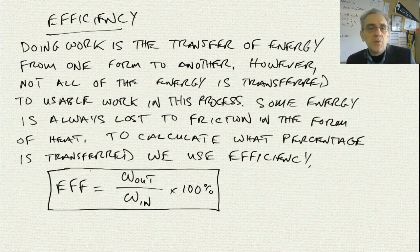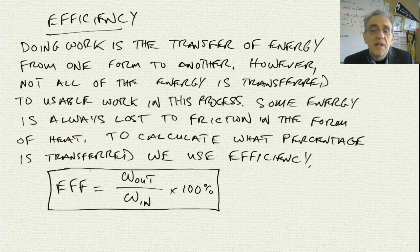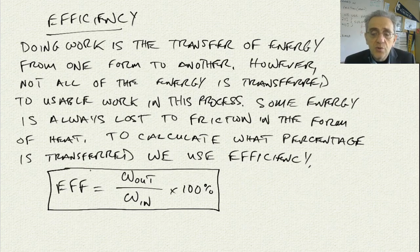I wrote down some notes here. Doing work is the transfer of energy from one form to another. However, not all of the energy is transferred to useful work in this process. Some of the energy is always lost to friction in the form of heat. And to calculate what percentage is transferred, we use the efficiency formula: efficiency equals work output divided by work input times 100%.